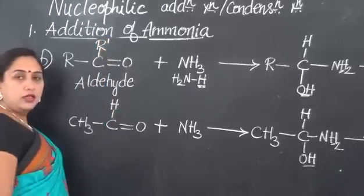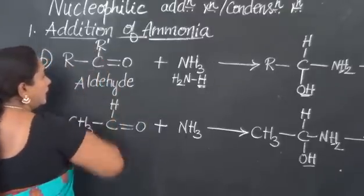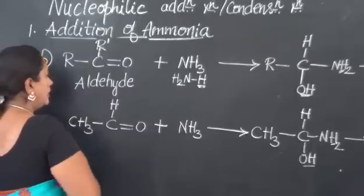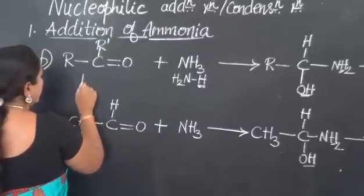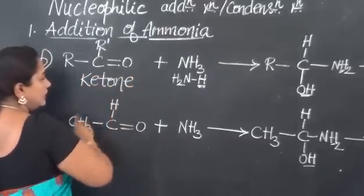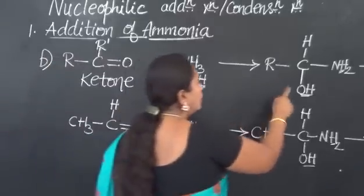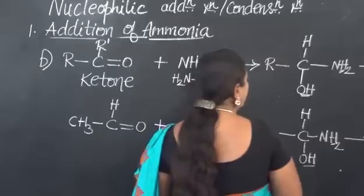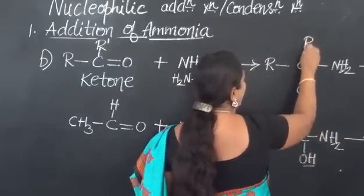If both the R's are alike group, then it is symmetrical ketone. If they are unlike group, then it is unsymmetrical ketone. So, therefore, the starting material is ketone. Ketone reacts with ammonia.